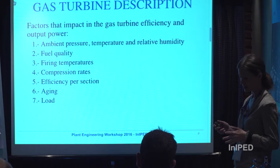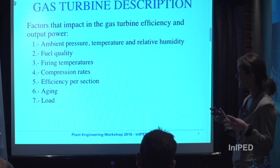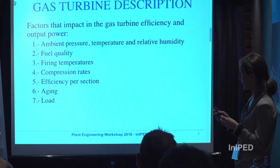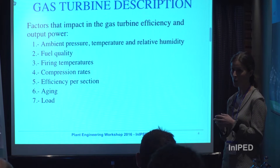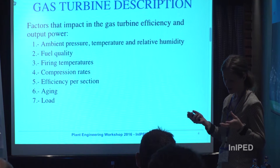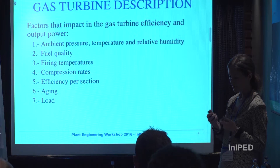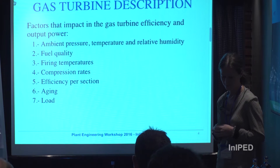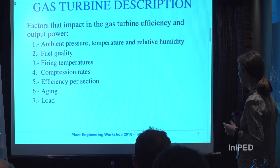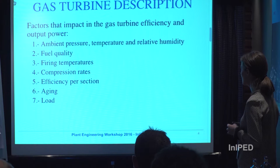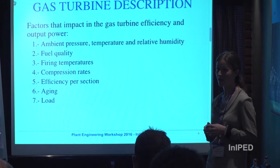Under this scenario, the compressor will require less energy to achieve the required pressure in the combustion chamber, so firing temperatures will be lower, reducing wear in the gas turbine. Conversely, an increase in ambient temperature, altitude, and relative humidity results in a reduction of efficiency, a reduction in output power, and consequently a reduction in the life cycle of the gas turbine.